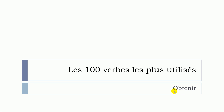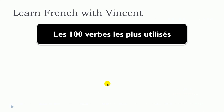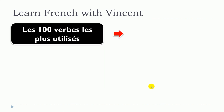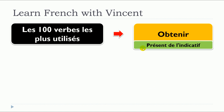In this lesson, we will see together the verb obtenir. The verb obtenir is translated to: to get, to obtain, or to receive in English. We'll see some examples with obtenir in présent de l'indicatif.